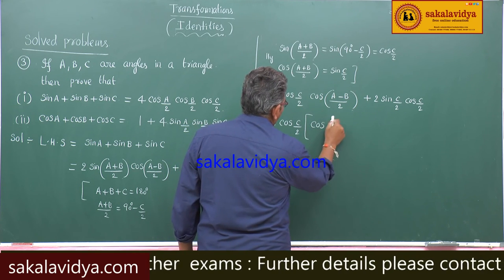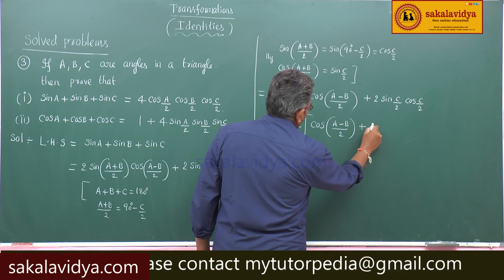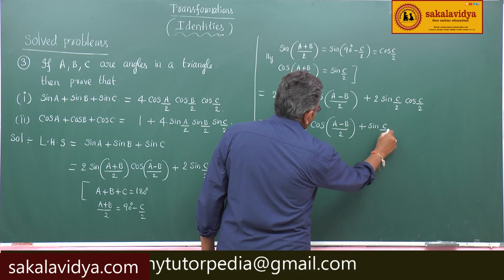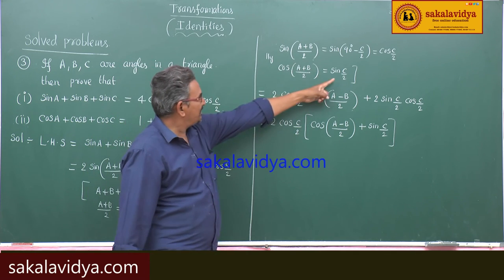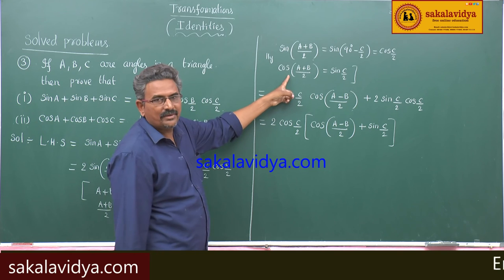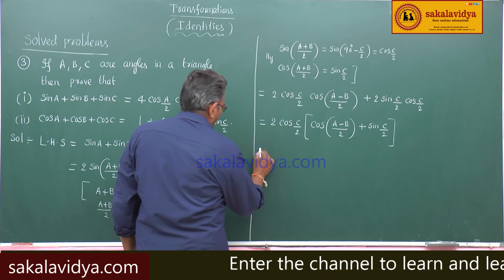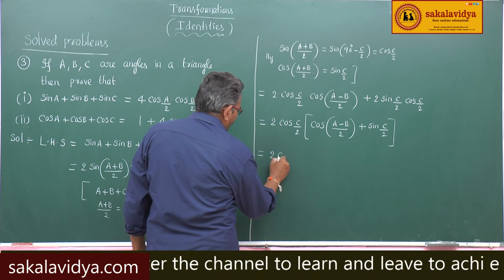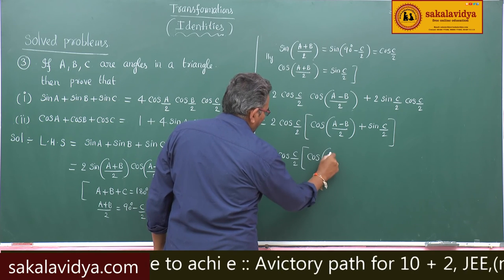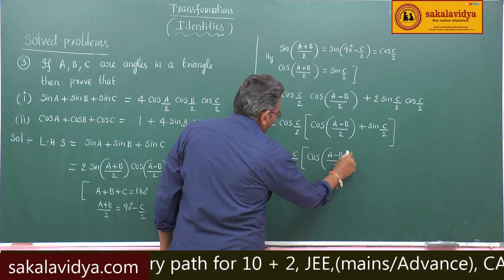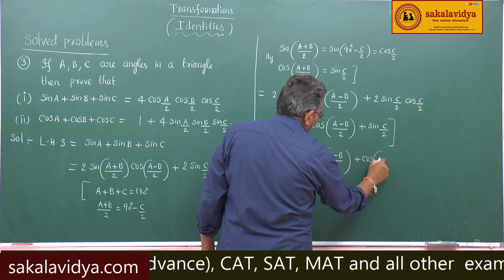Taking 2cos(C/2) common, we have cos((A−B)/2) plus sin(C/2). Now sin(C/2) is nothing but cos((A+B)/2), so this equals 2cos(C/2) into cos((A−B)/2) plus cos((A+B)/2).